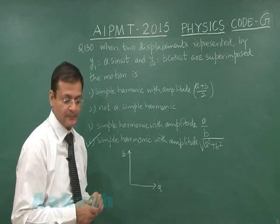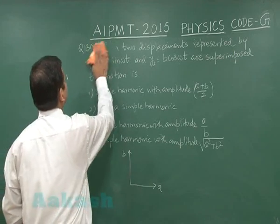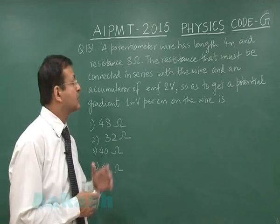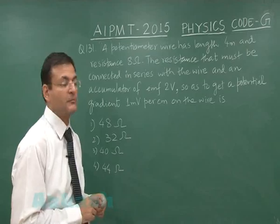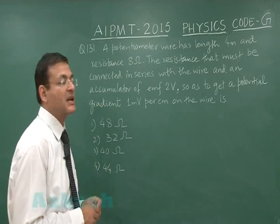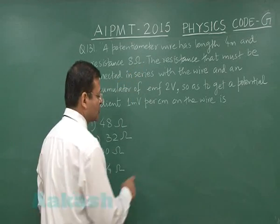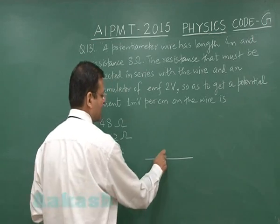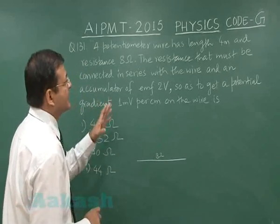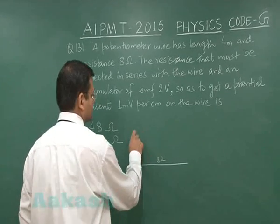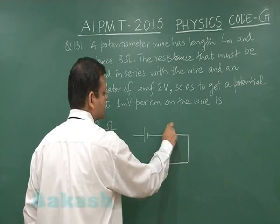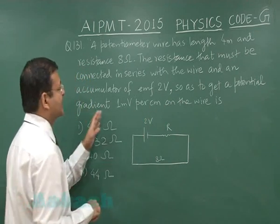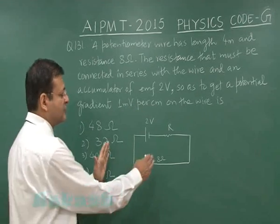Switching to question number 131 — this is a current electricity problem, essentially a single-loop circuit. Although it mentions a potentiometer, it is simply a single-loop problem. A potentiometer wire has a length of 4 meters and a resistance of 8 ohms. We need to find the series resistance R to be connected with an accumulator of 2 volts to get a potential gradient of 1 millivolt per centimeter.